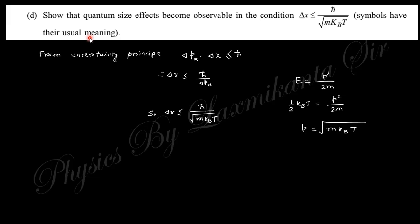Next question: Show that quantum size effects become observable if the condition Δx ≤ ℏ/√(mkвT). You know from the uncertainty principle Δx·Δpₓ ≤ ℏ, so Δx ≤ ℏ/Δpₓ. And p is nothing but √(2mE), and E is half kвT. So finally you will obtain this. You know from the equipartition of energy, energy in every degree of freedom is half kвT.